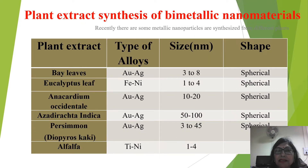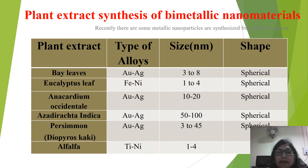Plant extracts are also used in the synthesis of bimetallic nanoparticles. Various plant extracts such as bay leaves, eucalyptus leaves, Azadirachta indica, and Alfalfa, etc., are used in the synthesis of various bimetallic nanoparticles with different sizes and shapes, including spherical particles.